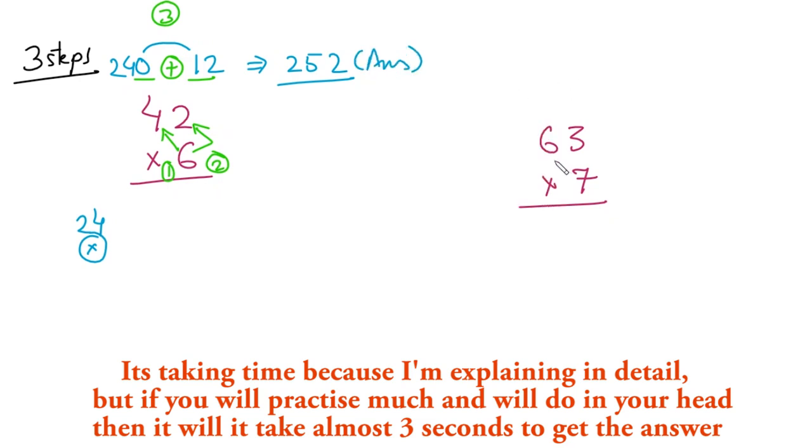First, multiply this number by this. 7 multiplied by 6 is 42, but we don't write 42, we write 420. Second step: multiply this number by this. 7 multiplied by 3 is 21, so we write 21. Third step: add these numbers. 420 plus 21 is 441. So 441 is our answer.